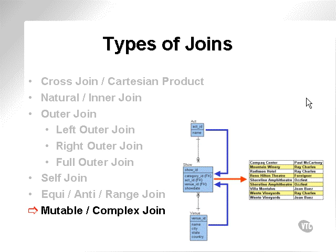Mutable or complex joins: the word mutable means subject to change. Sometimes I get confused as to why these joins were called mutable — it could mean that they should be changed since they are over-complex, or it could mean MU for multi-table, a multiple-table join. A mutable join and a complex join are not quite the same thing, although they're very similar. A mutable join is a join between more than two tables, while a complex join is the same but with added filtering.